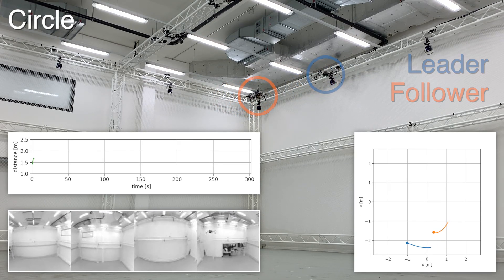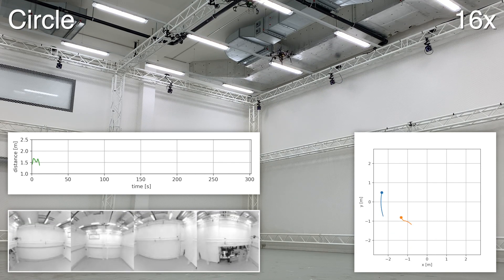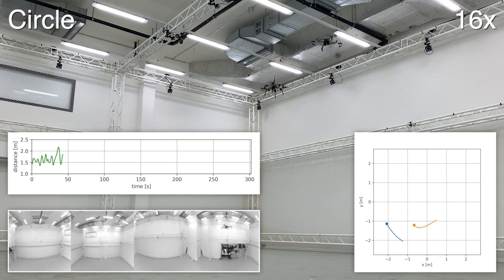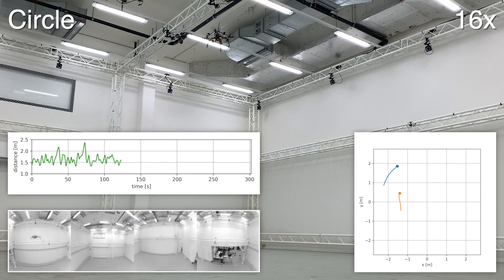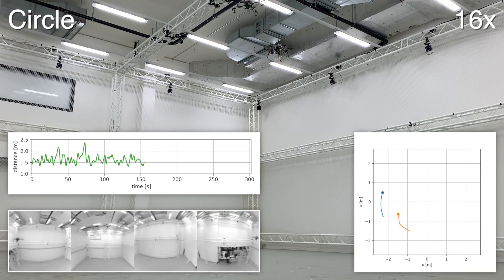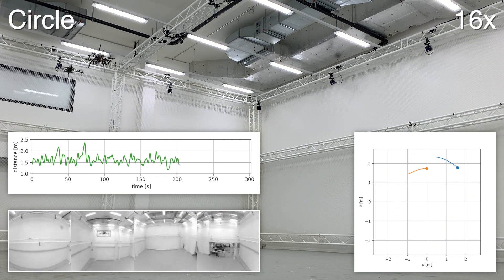The circle experiment shows that the neural controller can stay cohesive to another agent over long periods of time. Although small mistakes occur, the drone is able to correct its course and follow the leading agent at roughly the equilibrium distance observed in simulation.